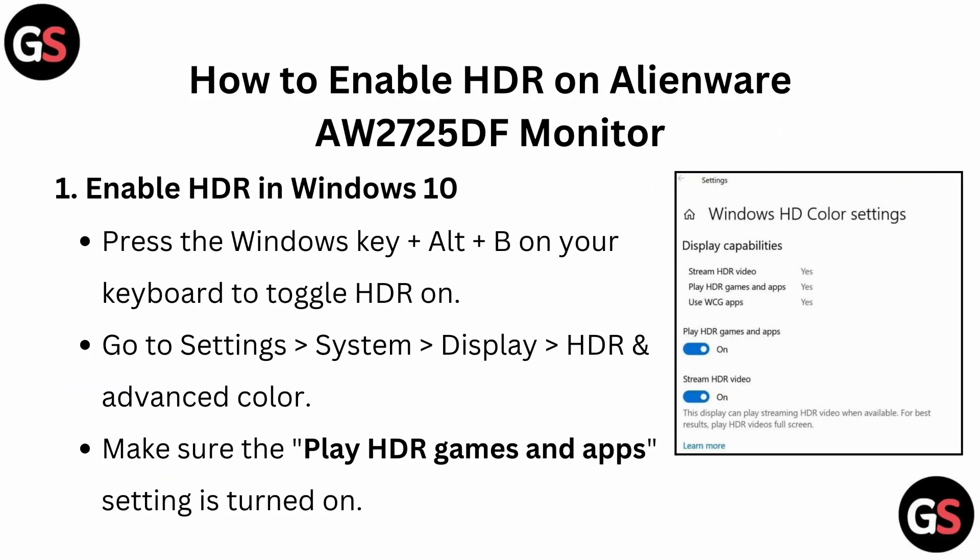Step 1: Enable HDR in Windows 10. To enable HDR in Windows 10, simply press the Windows key plus Alt plus B on your keyboard to toggle HDR on. After that, go to Settings, then click on System, then Display. You will find HDR and Advanced Color here — make sure the 'Play HDR games and apps' setting is turned on.